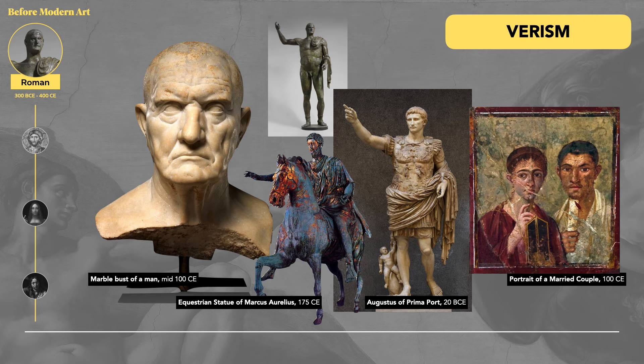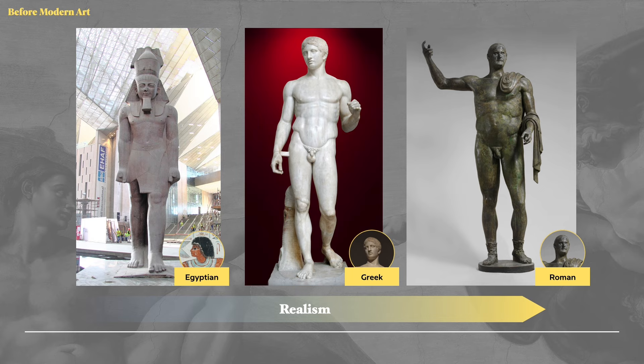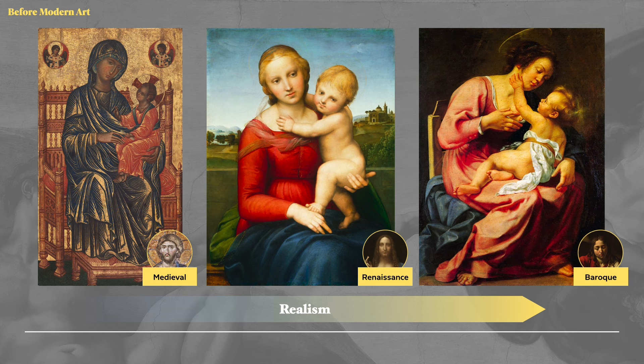Comparing these three standing figures can help us see the progression of art styles over time — a growth towards realism. We can also see this progression towards realism in the next three art styles: medieval, renaissance, and baroque. These three periods are known for their religious subject matter. Art is used to spread the word of Christianity, and this gives us an opportunity to see how the styles change over time.